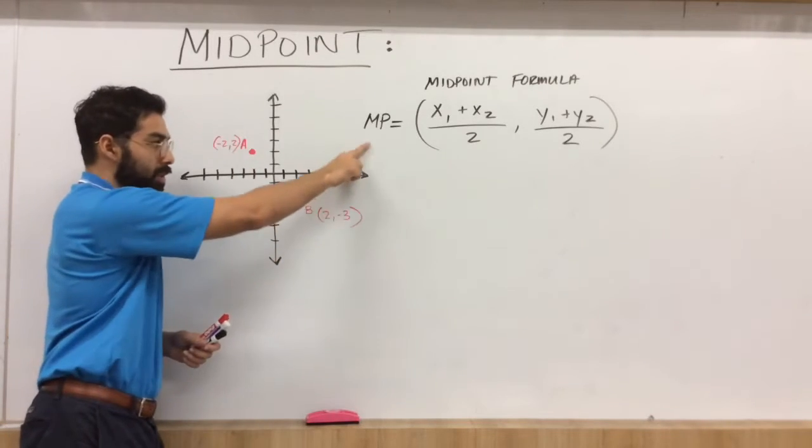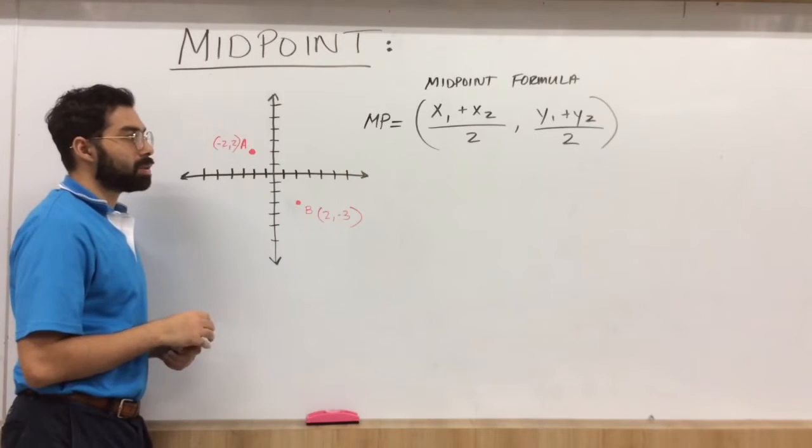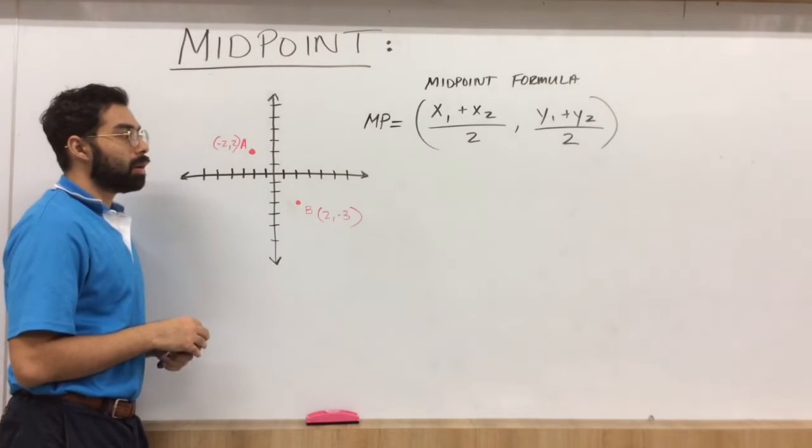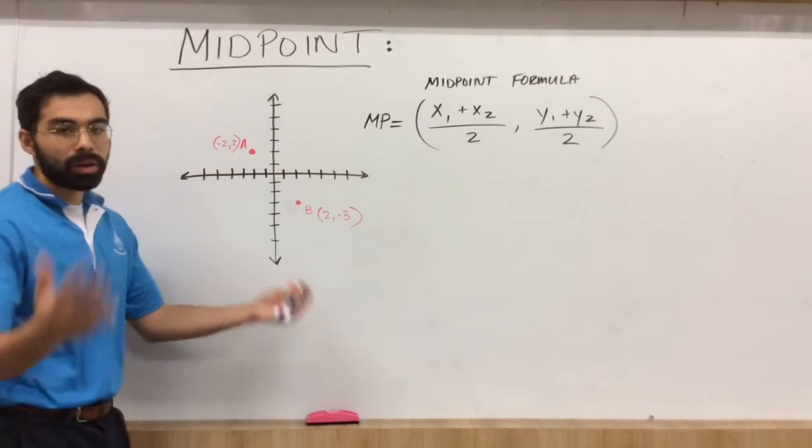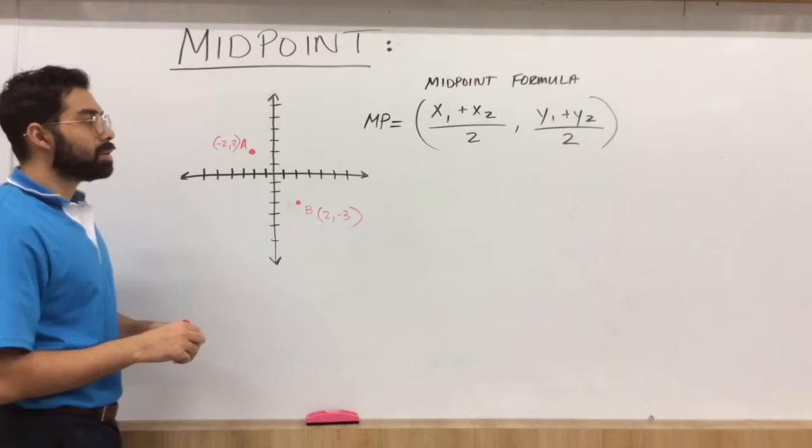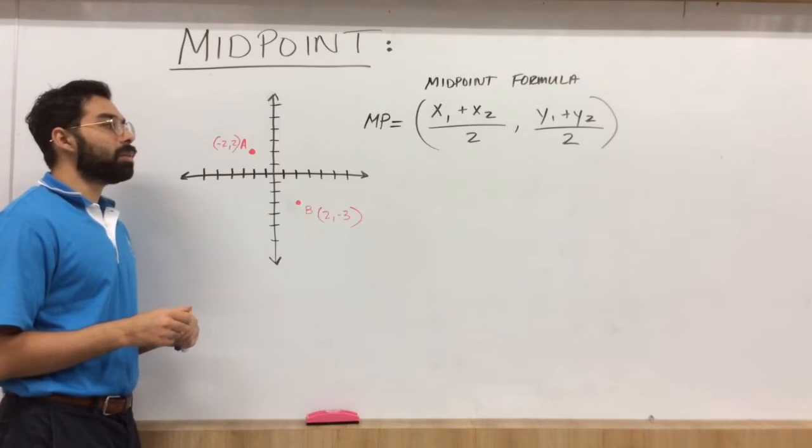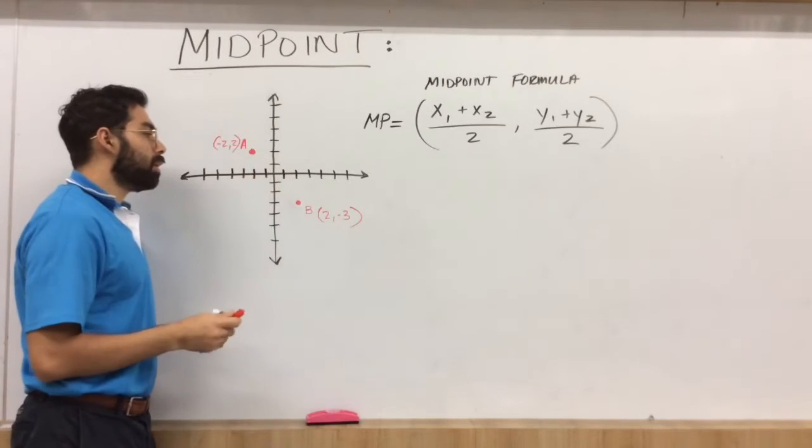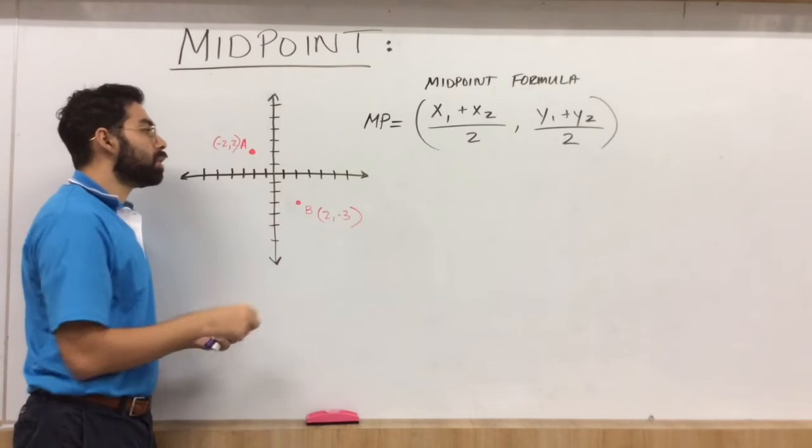And we'll be using this formula right here: x1 plus x2 divided by two, comma, y1 plus y2 divided by two. Essentially you're adding your x's and divided by two, adding your y's and dividing by two to find what is truly your midpoint between these ordered pairs.